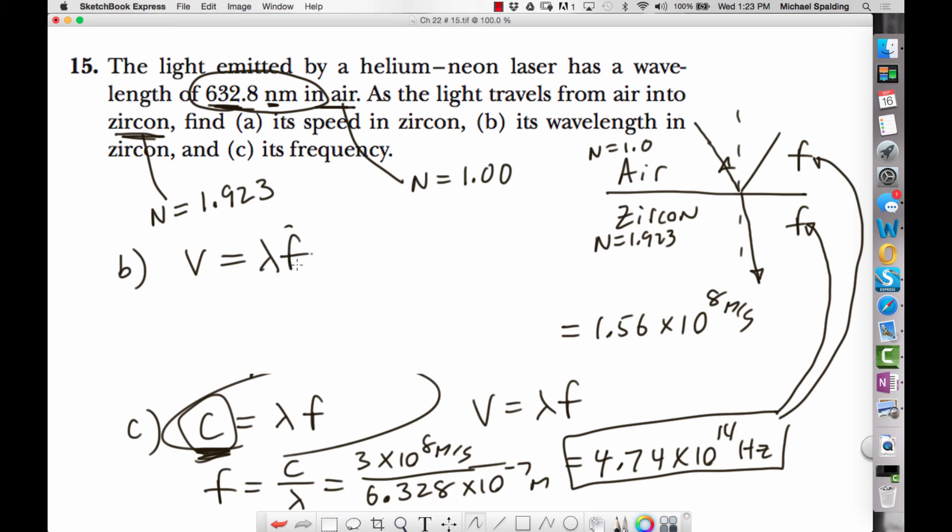So we go velocity is wavelength times frequency. So wavelength is going to be velocity over frequency. What's the velocity of the light in the zircon? We just solved for that.